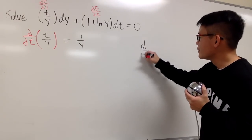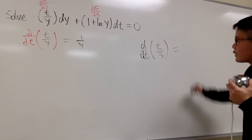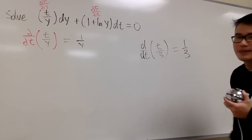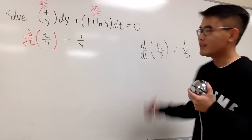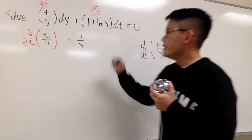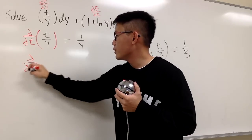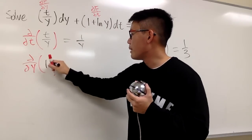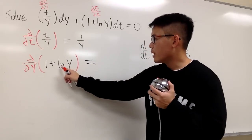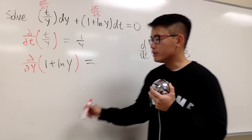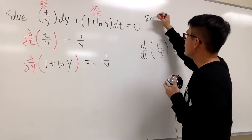Quick analogy: if I ask you what's the derivative of t over 3 in the t world, the answer is 1/3, because it's like 1 over 3 times t. Same thing here — y is the constant in the denominator. Next, we check the partial of the other term with respect to y, because that term was for t already. We have 1 plus ln y. The derivative of 1 is 0, and the derivative of ln y in the y world is 1 over y. So yes, they are the same — this is an exact equation.